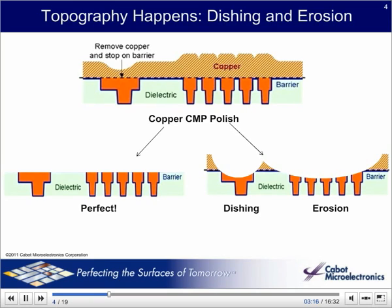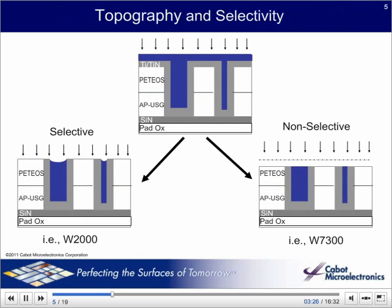Our slurry designers and CMP engineers have to trick the two surfaces to polish at the same rate through process, particles, and chemistry. Normally, we get some dishing and erosion and undesired topography when we have two very different materials, such as tungsten and oxide or copper and oxide. Often, to make sure that the process is precise, the metals would polish, but once they are cleared, the slurry has almost no effect on the underlying oxide.